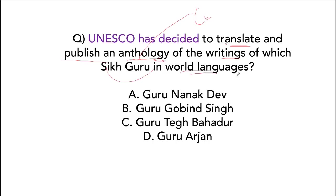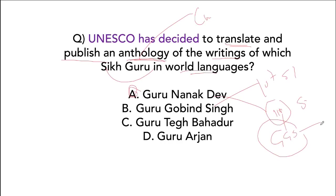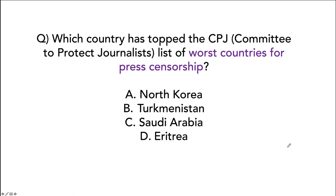The answer is Guru Nanak Dev — the first Sikh Guru. In total there are 11 Sikh Gurus; the 11th Sikh Guru is Guru Granth Sahib, which is the Holy Book of Sikhs, and after that there are no more Sikh Gurus. Which country topped the CPJ — Committee to Protect Journalists — list of worst countries for press censorship? The worst country is Eritrea and the second worst is North Korea.